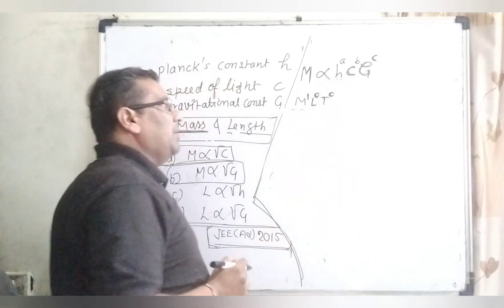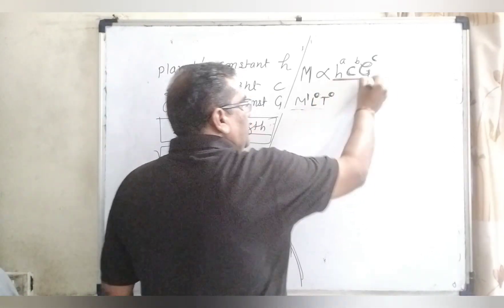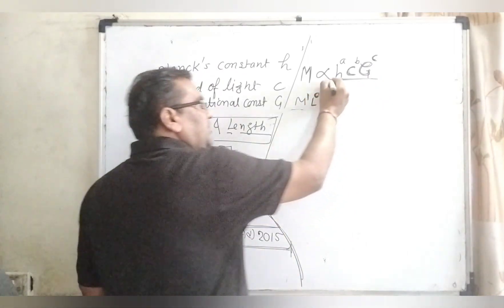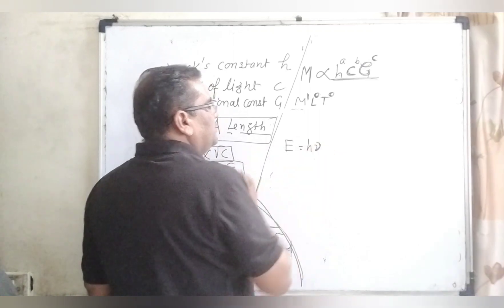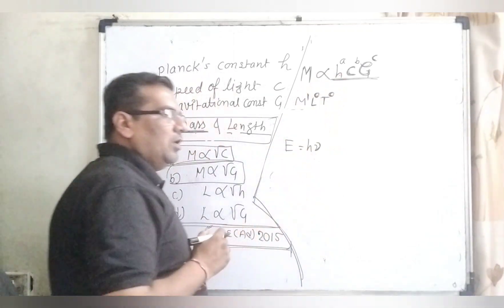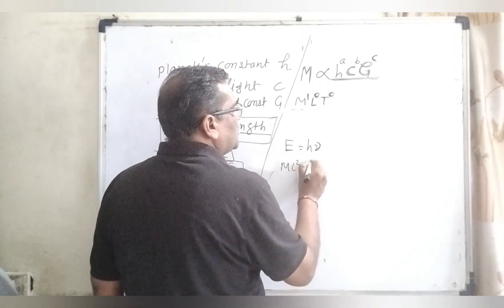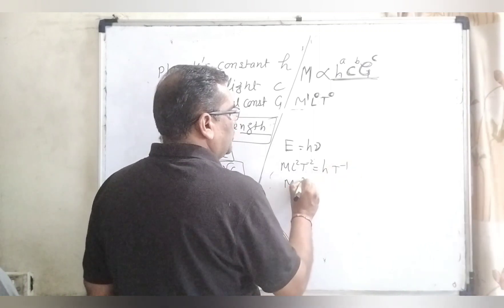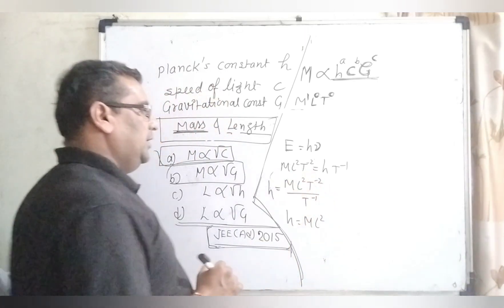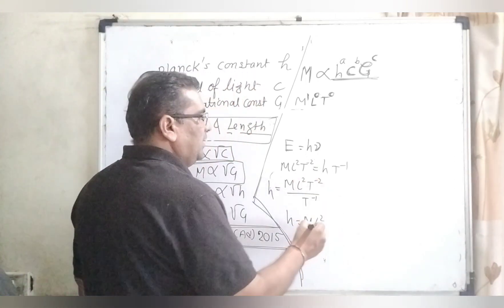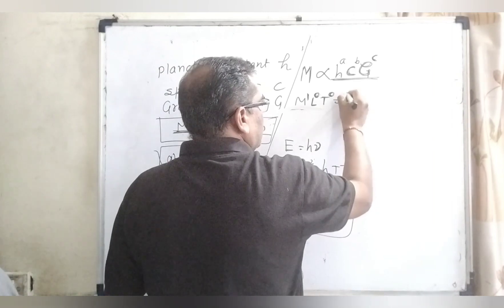Now, what are the dimension formulas of Planck's constant, speed of light, and universal gravitational constant? We should derive these from known formulas rather than memorizing. For Planck's constant, using E = hν: energy has dimension M L² T⁻², and ν has dimension T⁻¹, so h = M L² T⁻¹. This is the dimension formula of Planck's constant.